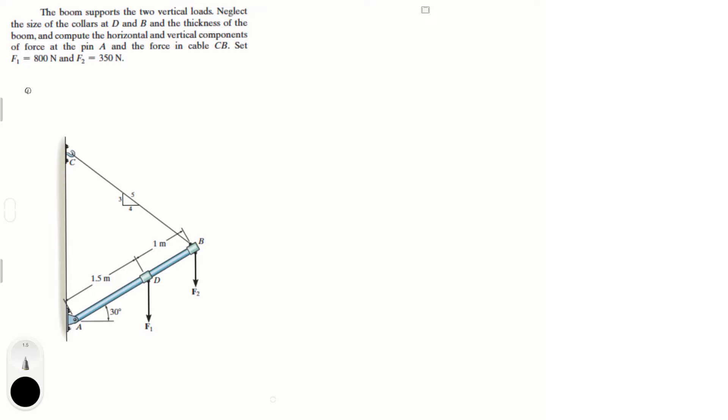So let's draw the free body diagram. We know we have a tension right here. I'm going to call it T. f2 is equal to 350 newtons, f1 is equal to 800 newtons, and at A we have a vertical reaction. Let's call it fAy.